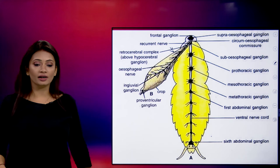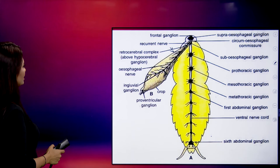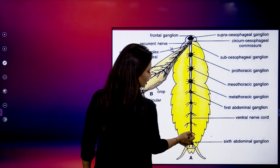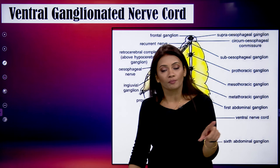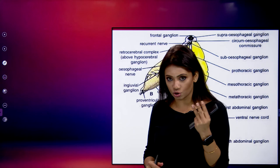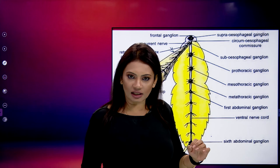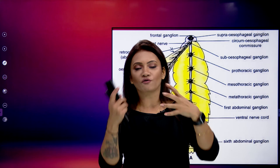Looking at the diagram from the head region all the way to the lower part, the black spots indicate ganglions — these are the pairs of ganglion present at different locations in the cockroach. Since we are done with the nerve ring — which had three parts: the brain, the sub-esophageal ganglion, and the connectives — the brain was completely sensory, the sub-esophageal ganglion was motor, and the connectives formed a ring around the esophagus.